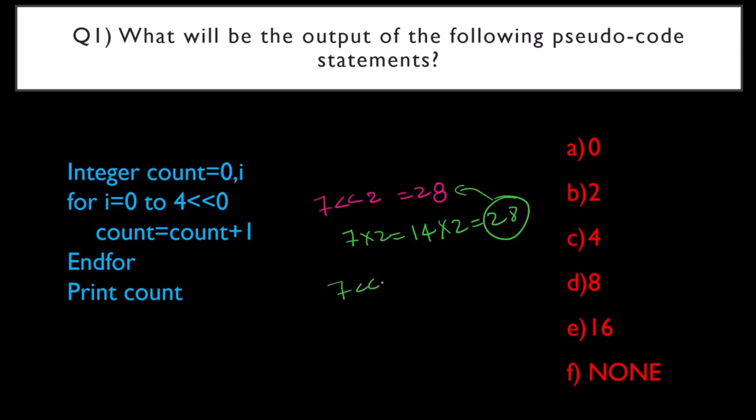If I say 7 left shift 3, this is nothing but 7 into 2 one time: 14. Again into 2: 28. Again into 2, I am going to get 56. So 7 left shift 3 means you are going to multiply this with 2 three times consecutively. After multiplying once, you get the answer. You multiply that again with 2 and that again with 2.